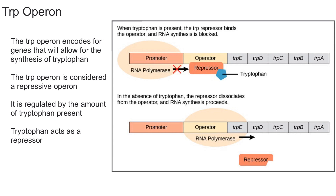When would you need to make tryptophan? Probably when tryptophan levels are low in the environment. When you don't have a lot of tryptophan, the cell is going to turn on the genes to create tryptophan to make sure the cell gets enough. Like the lac operon, the trp operon is adjustable — it's not simply on or off. When it's on, you can adjust how much tryptophan you make. You don't want to make an excessive amount if you don't need it, since that would be a waste of energy.